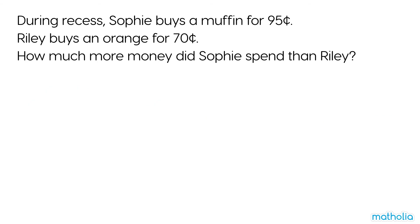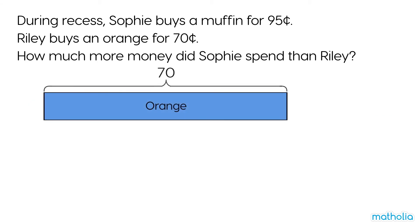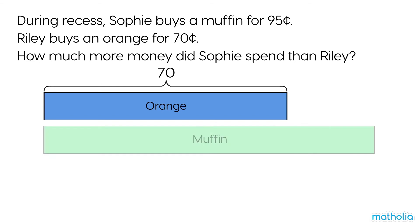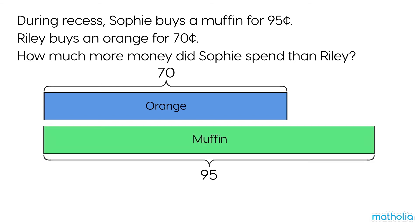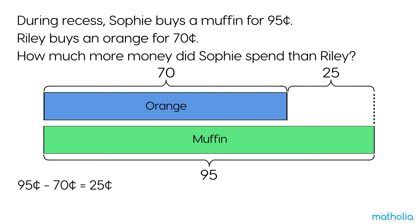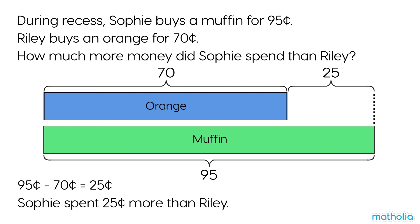Let's use a bar model to help find the answer. We draw a shorter bar to show the price of the orange. The muffin costs more than the orange, so we draw a longer bar. To find the difference in price, we subtract: $0.95 minus $0.70 equals $0.25. Sophie spent $0.25 more than Riley.